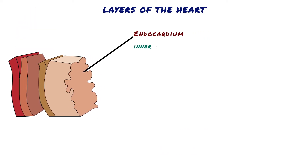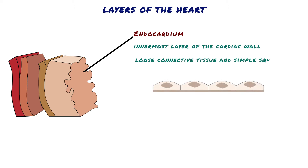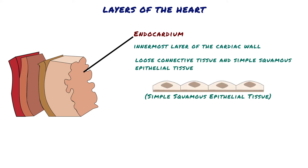Endocardium. The innermost layer of the cardiac wall is known as the endocardium. It lines the inner surfaces of the heart chambers, including the heart valves. Structurally, the endocardium is comprised of loose connective tissue and simple squamous epithelial tissue. In addition to lining the inside of the heart, the endocardium also regulates contractions.